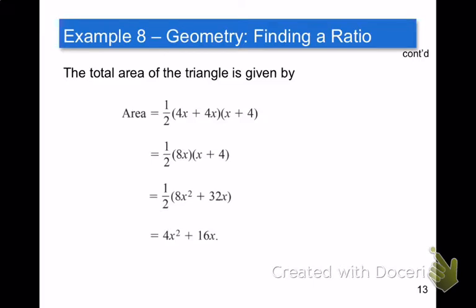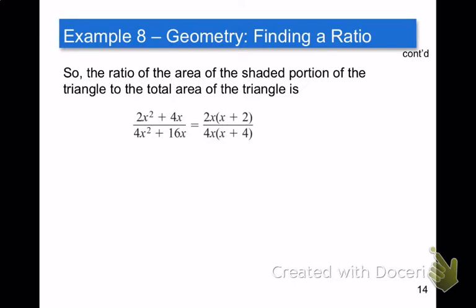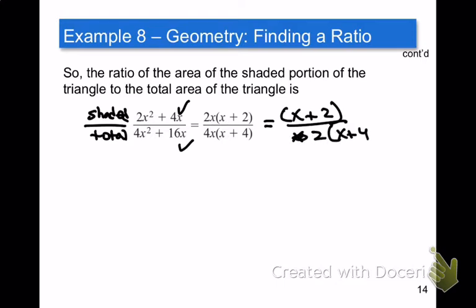Pause the video if you need to get all these processes, because then we're going to write the ratio. Write the ratio. Again, the ratio comes from writing the top, the shaded portion, over the total. That's what these mean. What we found to be the shaded is the top. What we found to be the total is the bottom. We factored out the 2x from the top and the bottom. Those two x's are going to cancel out nicely, because 2 over 4 simplifies to 1 half, and the x's cancel out. So you're just going to end up with x plus 2 over 2 times x plus 4.